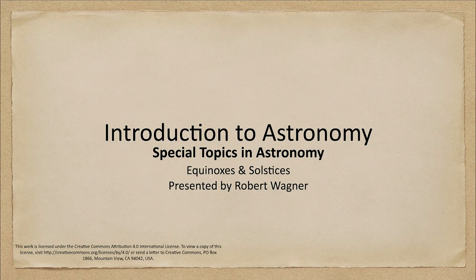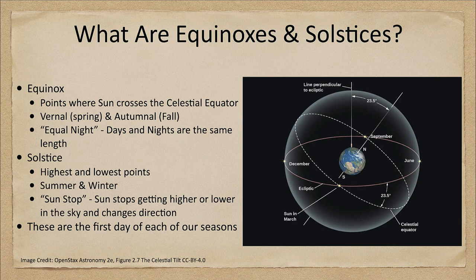Greetings and welcome to the introduction to astronomy. In this week's special topic in astronomy we are going to talk about the equinoxes and solstices and learn a little bit about what those mean. The equinox in astronomy is defined as the points where the sun crosses the celestial equator.